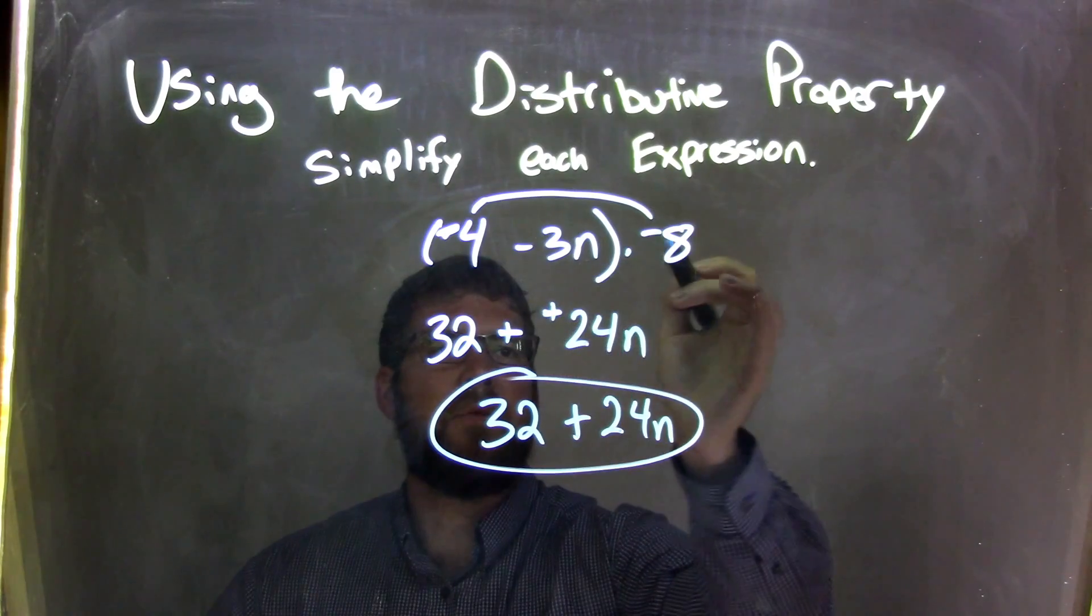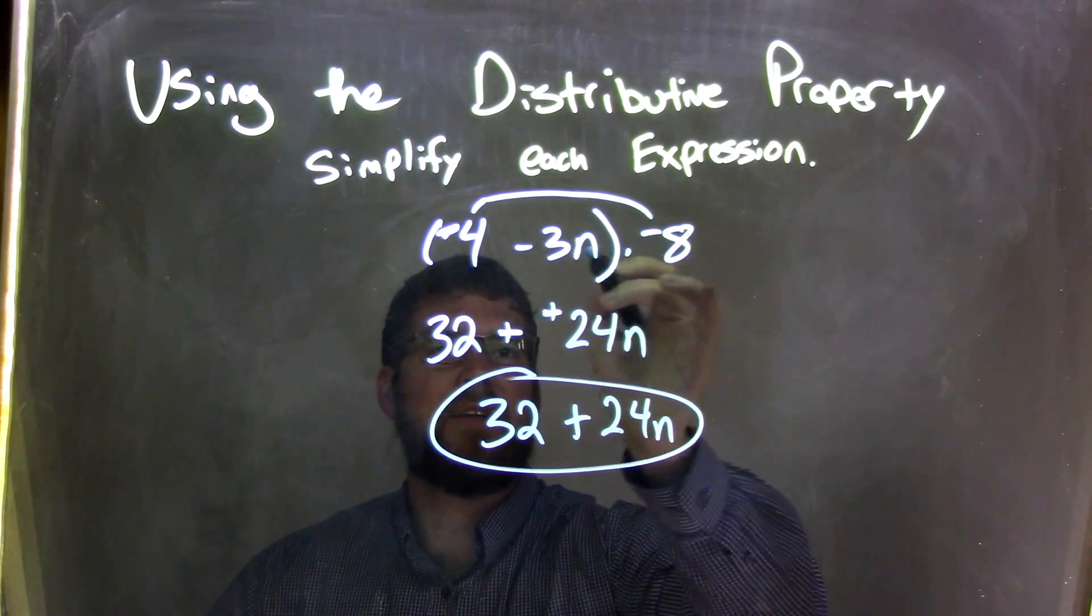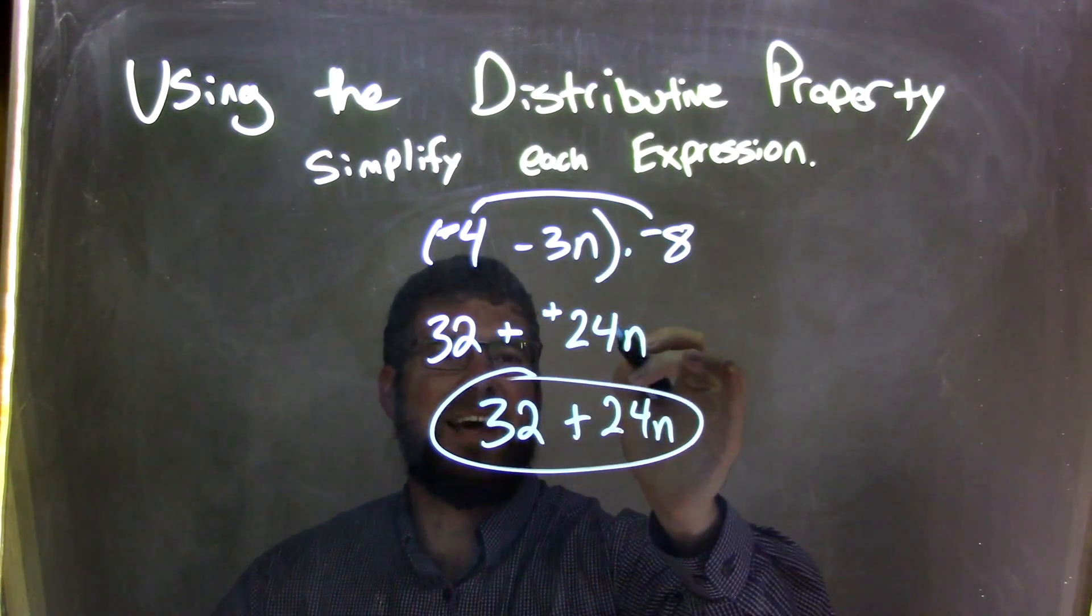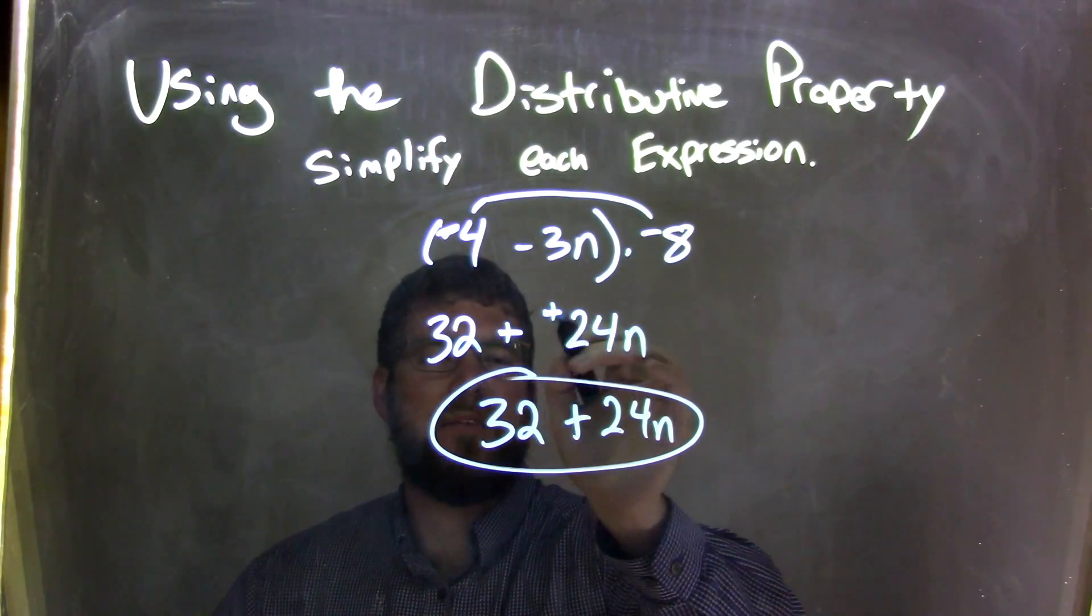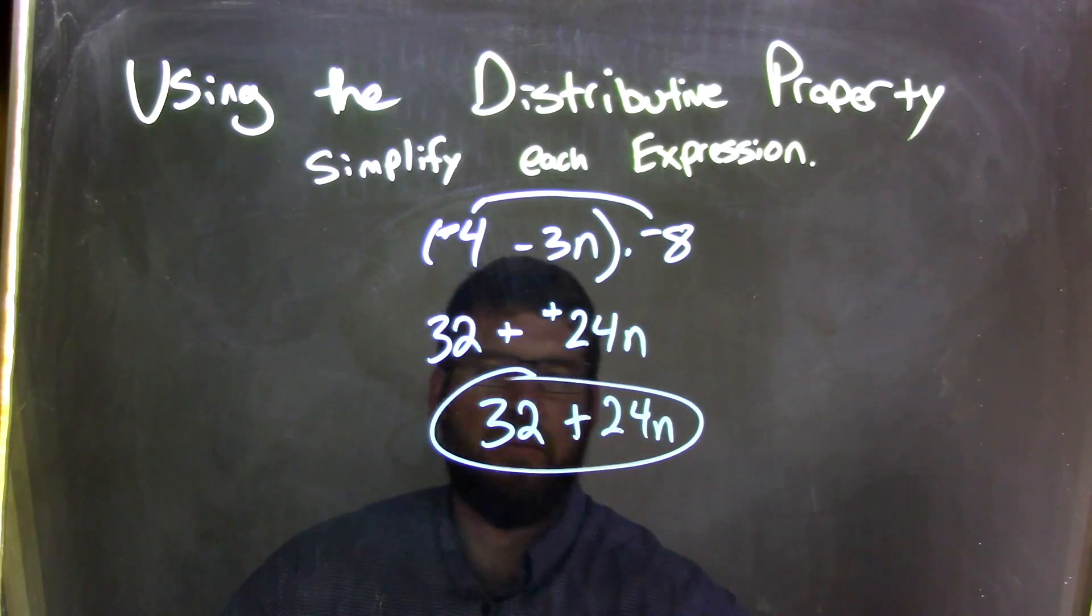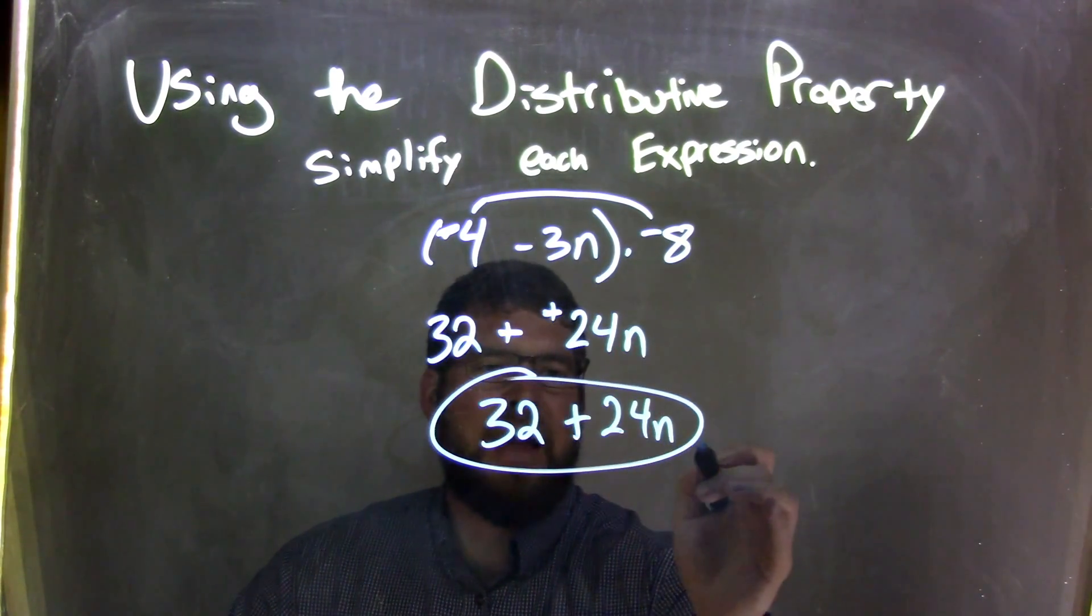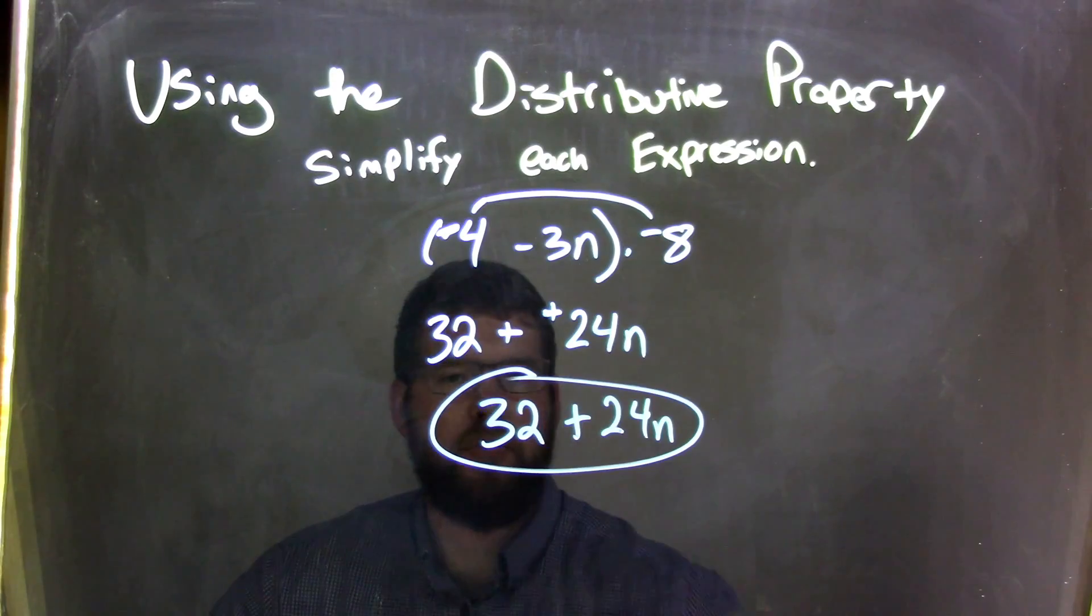We brought down the minus sign. Negative 8 times positive 3n is negative 24n. But then the two negatives, minus a negative, is adding a positive. So now we have 32 plus 24n, which is a much cleaner way to write it.